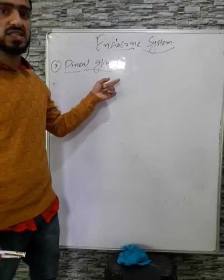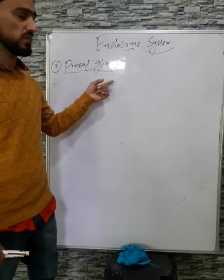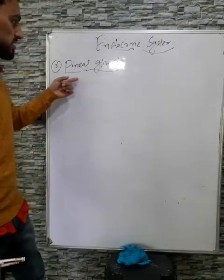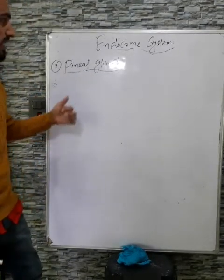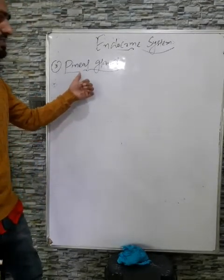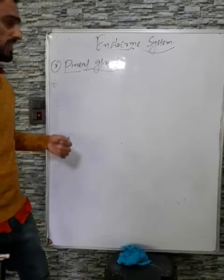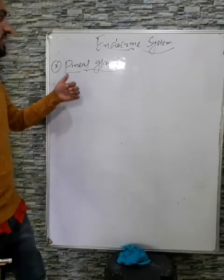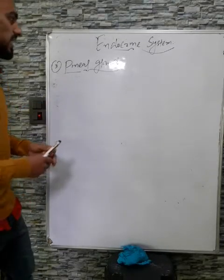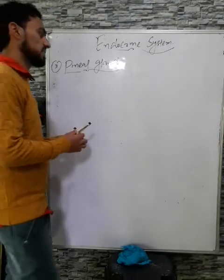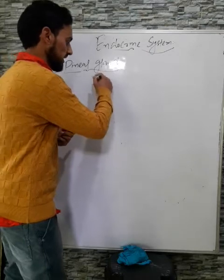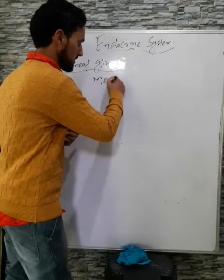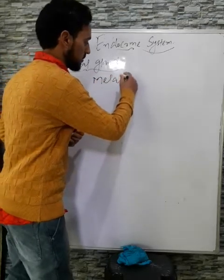The size of the pineal gland is the same as that of a rice grain. The pineal gland is a pea-shaped gland and it secretes a single hormone known as melatonin.